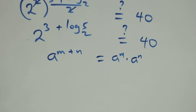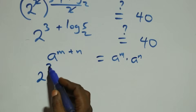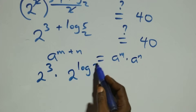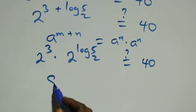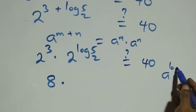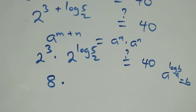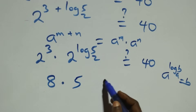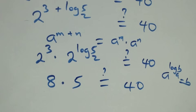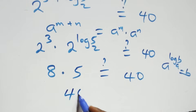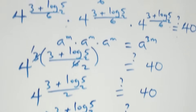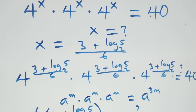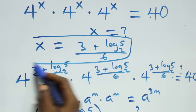Applying the law a^(m+n) equals a^m times a^n, this becomes two raised to power three times two raised to power log five base two equals forty. Two raised to power three is eight. Then applying the identity a raised to power log b base a equals b, we have two raised to power log five base two equals five. So eight times five equals forty, which equals forty on the right-hand side. The left-hand side equals the right-hand side. Therefore, we conclude that x equals three plus log five base two, all over six, satisfies the given problem.